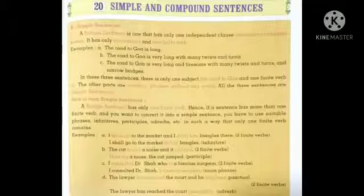I shall go to the market and I shall buy bangles there. Now we will use two finite verbs. Now we will use infinitive to use simple sentences. I shall go to the market to buy bangles. अब यहां पर जो finite verb है वो एक ही है और simple sentence form हो गया है.